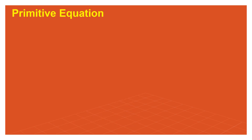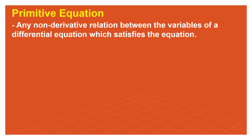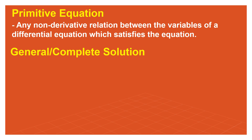There are different names for an equation. The primitive equation is any non-derivative relation between the variables of a differential equation which satisfies the equation — it is like the general equation before any derivation process has been done.